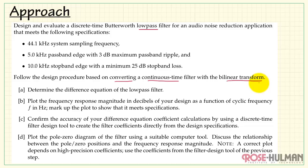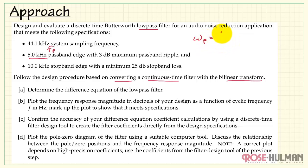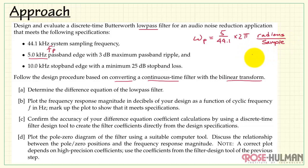We're going to follow the procedure of converting a continuous-time filter with the Bilinear Transform. In Part A, we want to determine the difference equation for the low-pass filter — that really means executing the design process. We can identify the passband frequency omega_p as a scaled version of the normalized frequency, where we take 5 kHz divided by the system sampling frequency of 44.1 kHz. That's a normalized frequency, and then we multiply by 2 pi to get radians per sample.